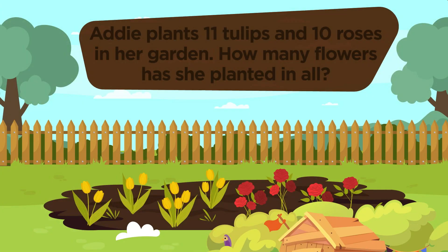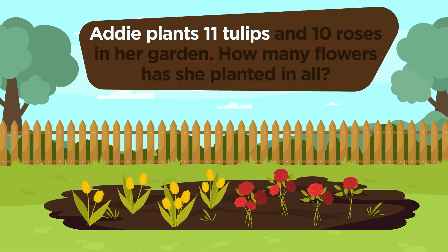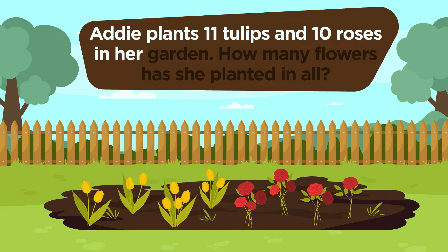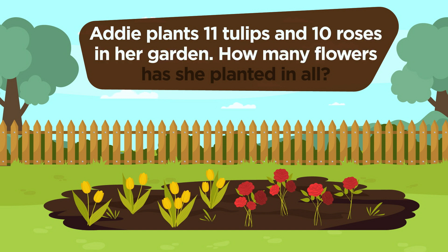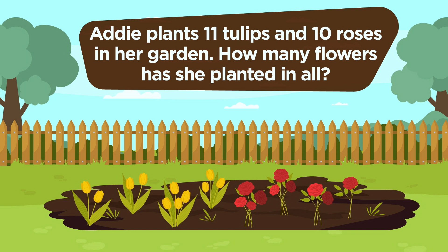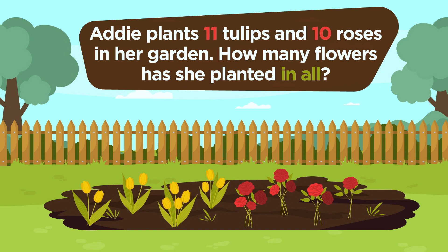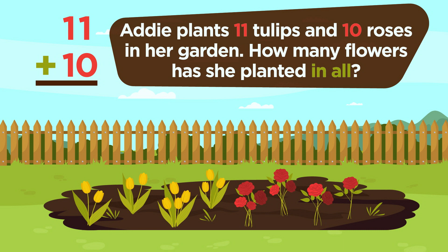Now find the clues in this word problem. Addie plants 11 tulips and 10 roses in her garden. How many flowers has she planted in all? The words 'in all' are a clue — they tell you to add to solve the problem. Find the numbers in the problem: 11 and 10. To add, stack the numbers. Begin in the ones column: 1 plus 0 equals 1.